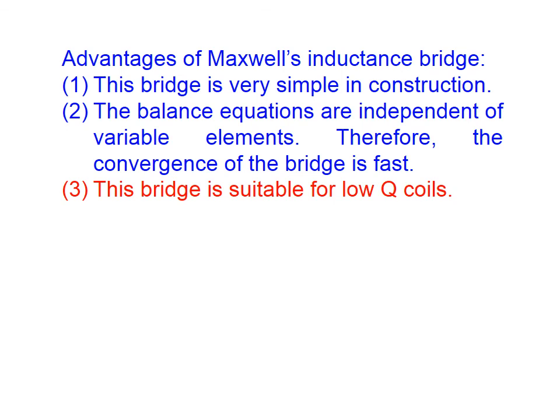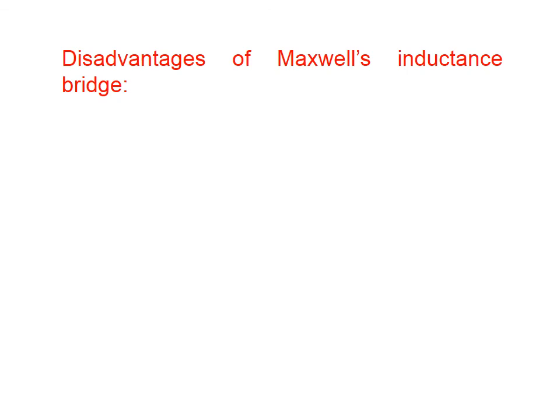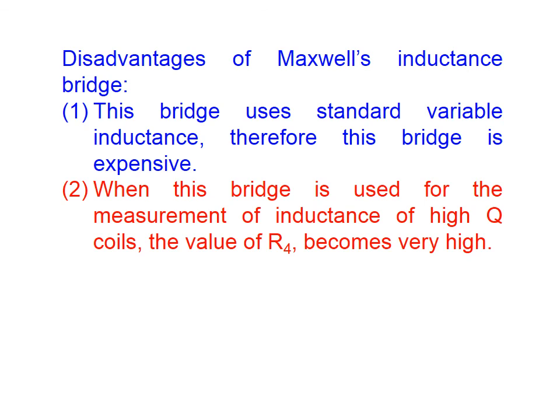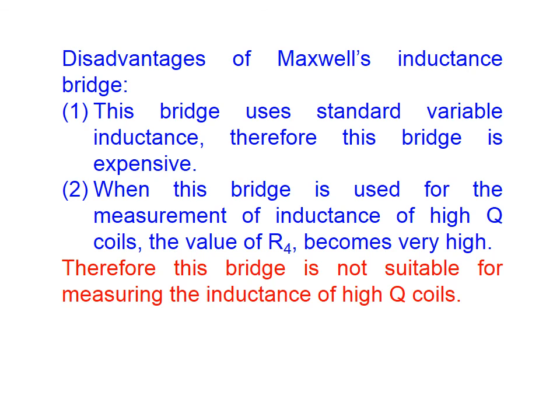Now let us enlist the disadvantages of Maxwell's Inductance Bridge. This bridge uses a standard variable inductance, and therefore it is quite expensive. When this bridge is used for the measurement of inductance of high Q coils, the value of resistance R4 becomes very high. Therefore, this bridge is not suitable for the measurement of inductance of high Q coils.